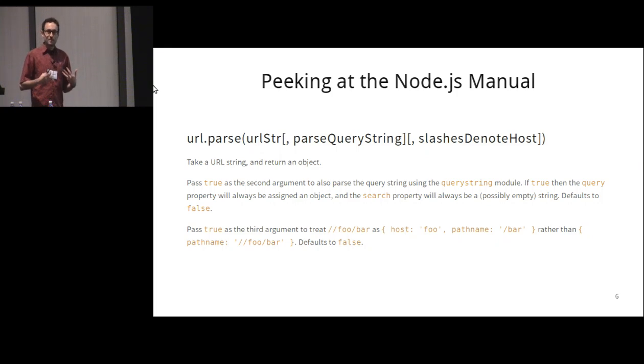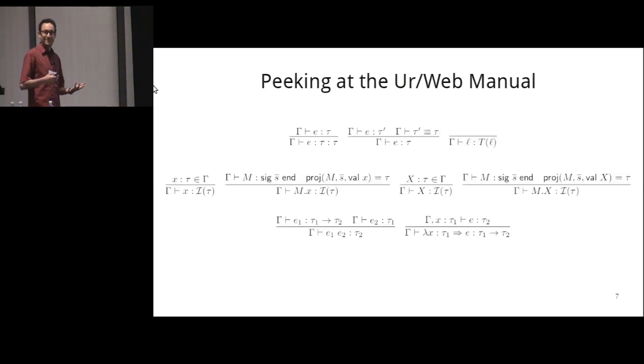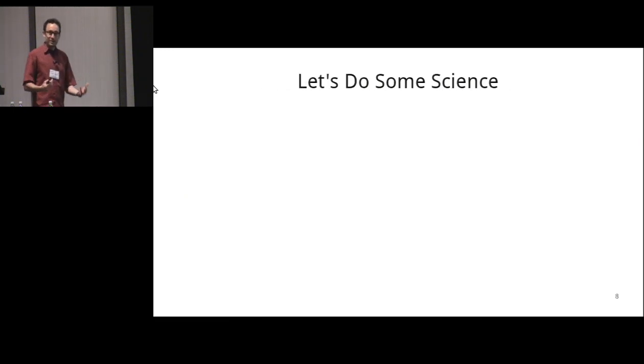So let's look at the programmer productivity end of this comparison. We might look at the reference manuals of the different frameworks that we're considering. Here's one peek inside the manual for Node.js. It's a very reasonable explanation of how you parse a URL into its pieces. Let's also take a look at the manual for UrWeb. I'll open it up and pick a page at random, and we might see something like this, a bunch of typing rules. Because I know from my email inbox that a lot of programmers out there don't appreciate this kind of thing, and they conclude immediately this is not a practical language.